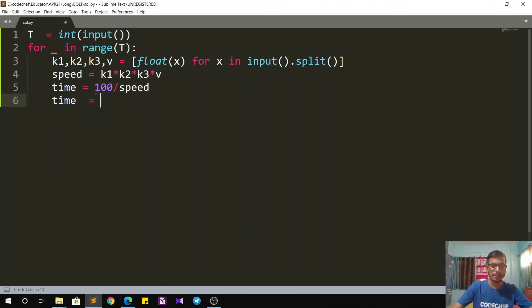So time is nothing but 100 divided by speed, but that's not all. We have to round it off to two decimal places. That can be easily done in Python by just using the round function. So I can just round off time to two decimal places. And then I have to just check if time is less than 9.58, then my answer is yes, or else my answer is no.